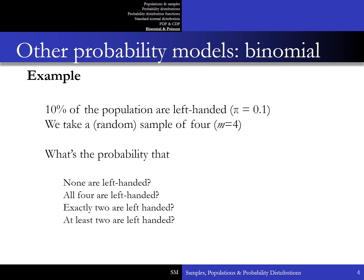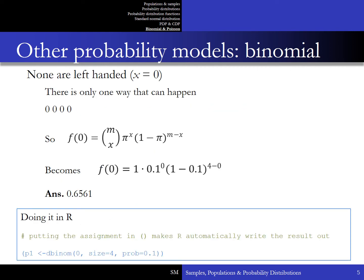Let's unpack this further using an example. Say that 10% of the population are left-handed — pi equals 0.1. We take a random sample of 4 people from the population, so m equals 4. We want to find: the probability that none of the 4 are left-handed, all 4 are left-handed, exactly 2 are left-handed, and at least 2 are left-handed. Let's consider the case where none are left-handed, where x equals 0.